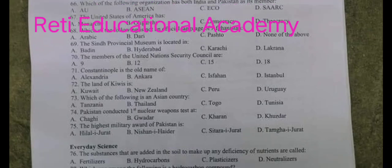Question number 71. Constantinople is the old name of? A. Alexandria, B. Ankara, C. Ishvan, D. Istanbul. The correct answer is D. Istanbul.